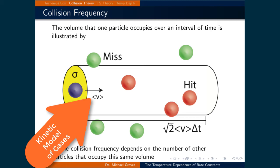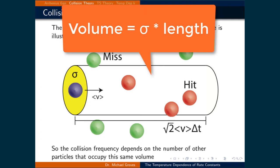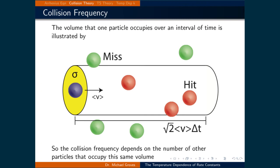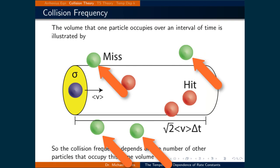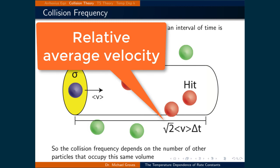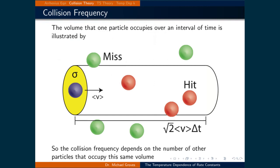Using the kinetic model of gases, we can determine the average velocity of a particle, denoted as v in angled brackets. The multiplication of this length by sigma gives the volume that a particle occupies. If another particle enters this volume during the specified time interval, then the two particles will collide. This is illustrated by the cylinder where any red particle — those with their geometric center inside the cylinder — has an opportunity to collide with the blue particle; those outside the cylinder, shaded in green, will not. Of course, all the particles are moving, not just the blue one. To account for this, the square root of 2 times the average velocity gives the relative average velocity between the particles. Therefore, the cylinder has a volume of the square root of 2 times the average velocity times delta t times sigma.